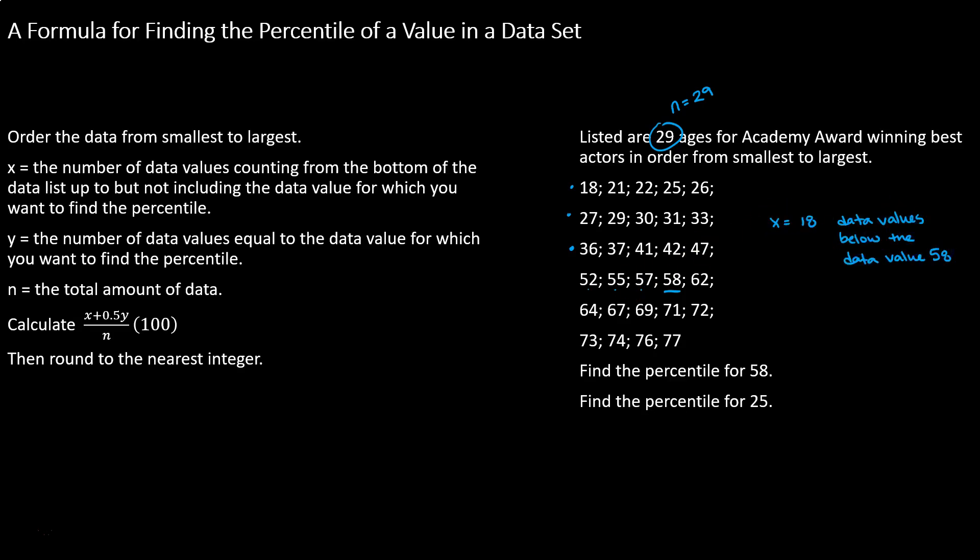Okay, now we need to find y. Y is the number of times our data value replicates. Well 58 only appears once so y is equal to 1. Now that we have those three values we can plug them into our formula to calculate the percentile.